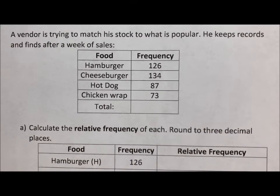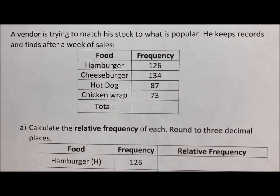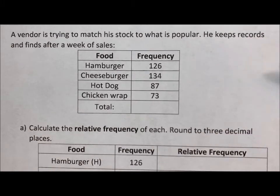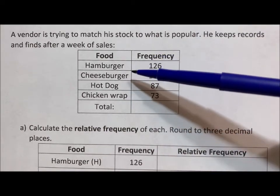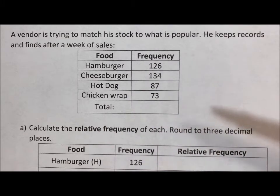Hi, welcome to Raw Math. Today I'm doing a series of videos on probability. A vendor is trying to match his stock to what is popular. He keeps records and finds after a week of sales the frequency of hamburgers, cheeseburgers, hot dogs, and chicken wraps which are sold at his place of business. He wants to figure out the relative frequency. The raw data tells a good story but the relative frequency will tell him a better story.